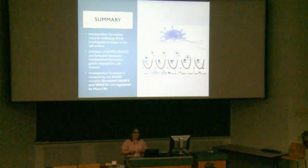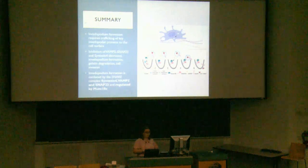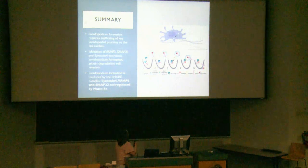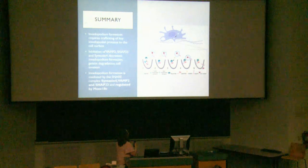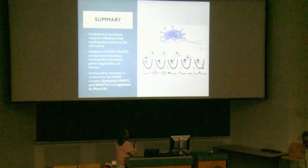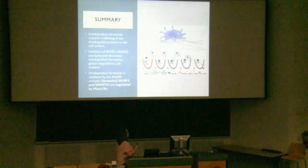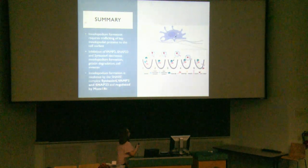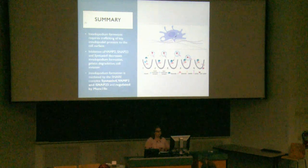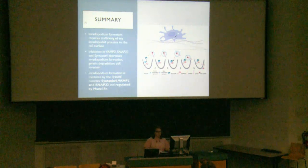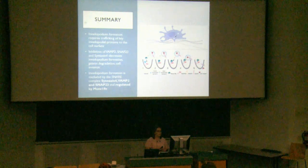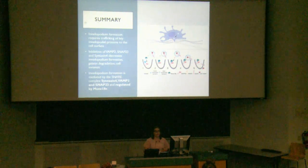In summary, invadipodia formation requires trafficking of key invadipodial proteins to the cell surface. In our working model, we have two T-SNAREs at the plasma membrane — Syntaxin-4 and SNAP-23. Upon MUNC18C binding to Syntaxin-4, we get trans-SNARE complex formation, allowing VAMP-2 to bring in a vesicle and transport EGFR and MT1-MMP to invadipodia. Inhibition of VAMP-2, SNAP-23, and Syntaxin-4 decreases invadipodia formation, gelatin degradation, and cell invasion, with the SNARE complex of Syntaxin-4, VAMP-2, and SNAP-23 regulated by MUNC18C.